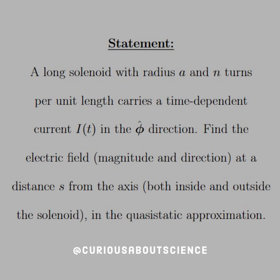Let's dive into this first question. A long solenoid with radius A and N turns per unit length carries a time-dependent current I of T in the phi-hat direction. Find the electric field — magnitude and direction — at a distance S from the axis, both inside and outside the solenoid, in the quasi-static approximation.